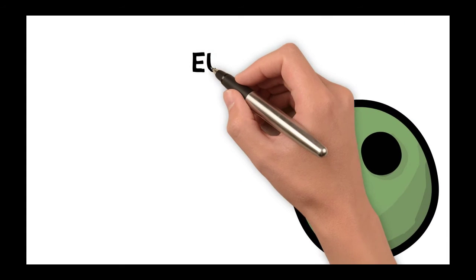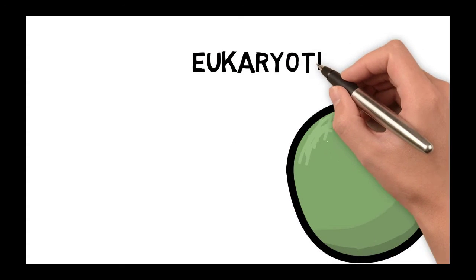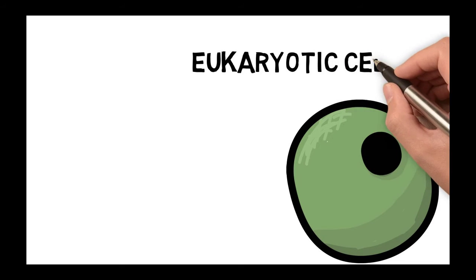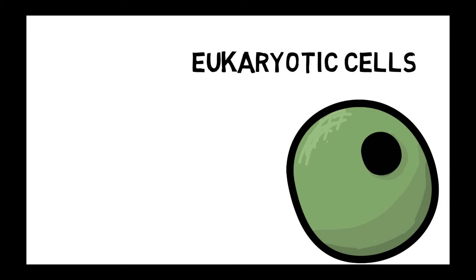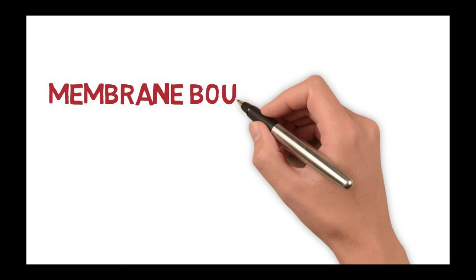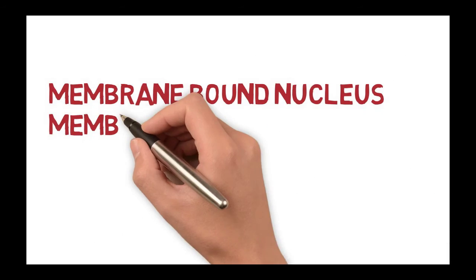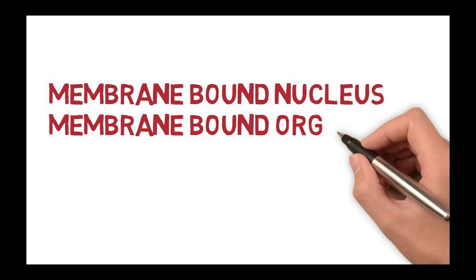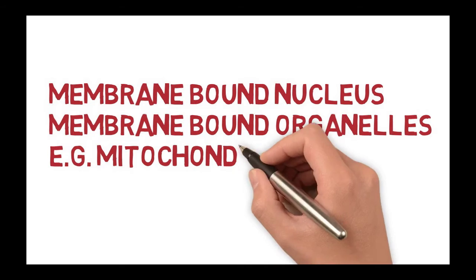Eukaryotic means the cells contain a true nucleus — the DNA is contained in a membrane-bound nucleus. In addition to this membrane-bound nucleus, the cells also have membrane-bound organelles, for example mitochondria.